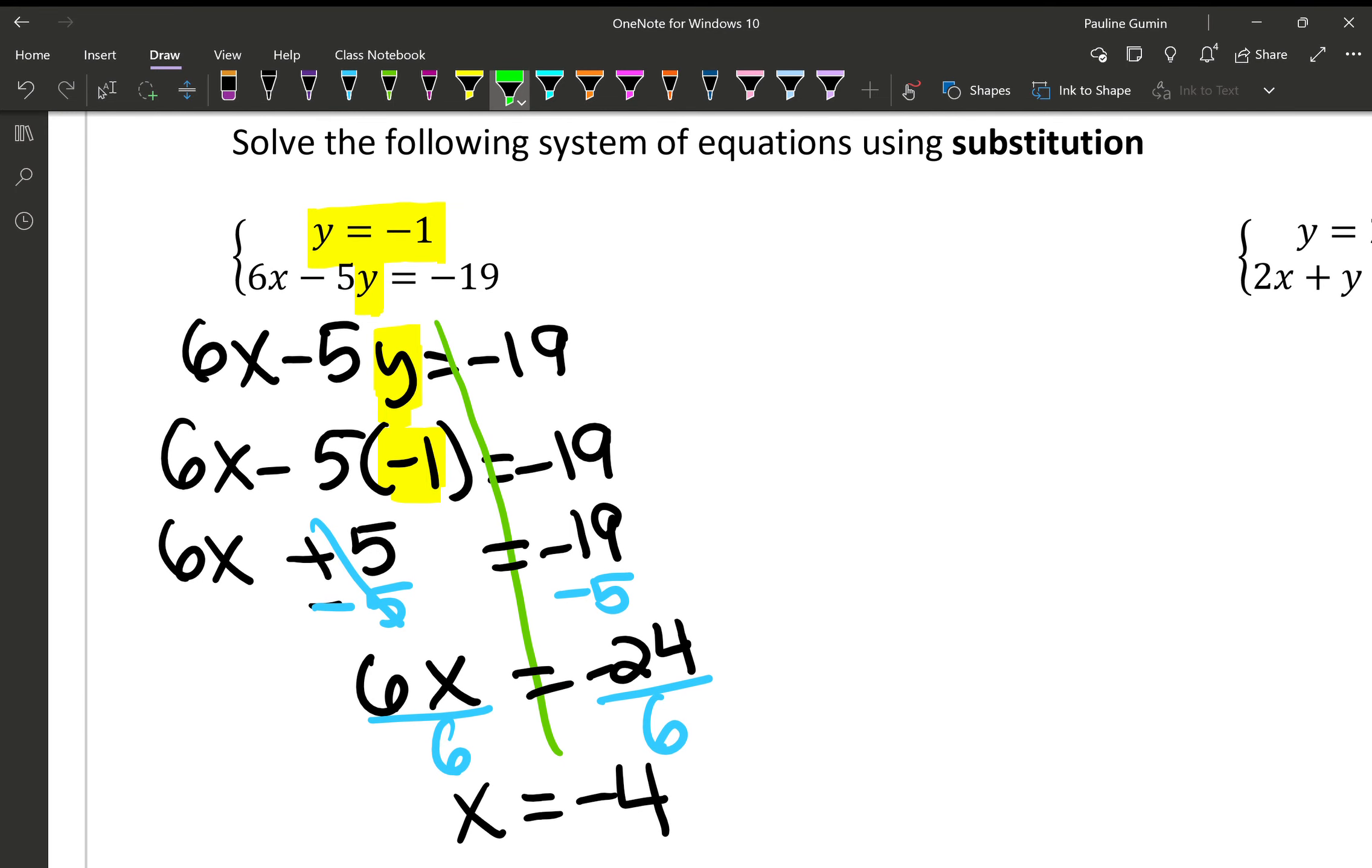x equals negative 4. Now, lucky ducky us, we already have what y equals and what x equals. We don't really have to do much. Negative 4, negative 1. I don't remember what I highlighted with. I think it was this. I can't see. My screen is on the yellow. All right. This one was easy because we already had y defined.